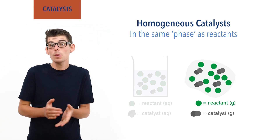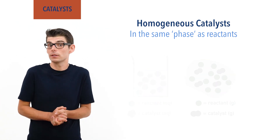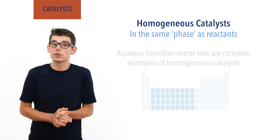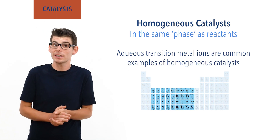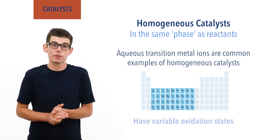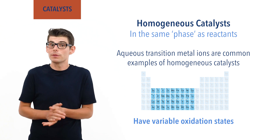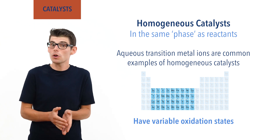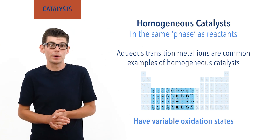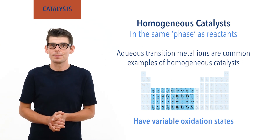Aqueous transition metal ions are commonly used as homogeneous catalysts, as they have variable oxidation states, allowing them to easily oxidize and reduce other aqueous ions.